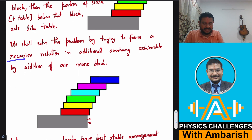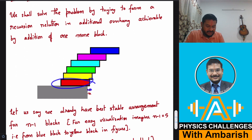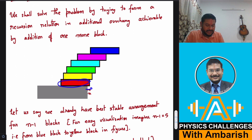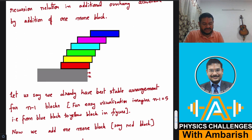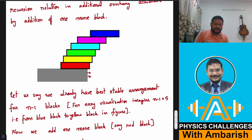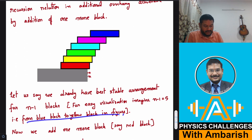We form a recursion relation for the additional overhang with each new block. For example, say we already have the optimal arrangement for n−1 blocks — imagine n−1 = 5, meaning these five blocks from the blue block to the yellow block in the figure are already placed. Now we add one more block, the red block, below this arrangement.